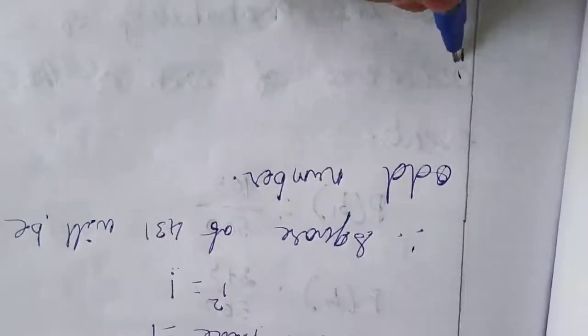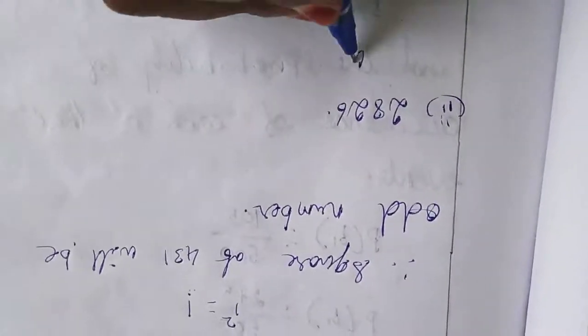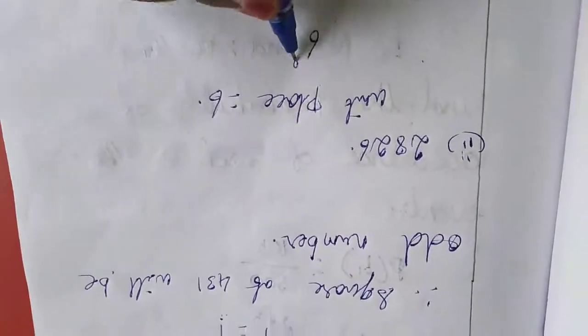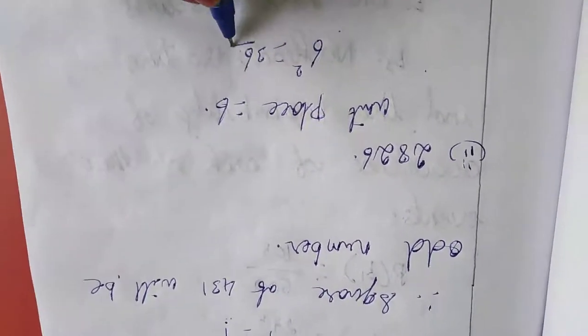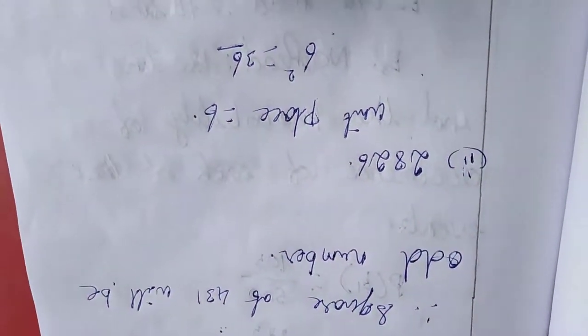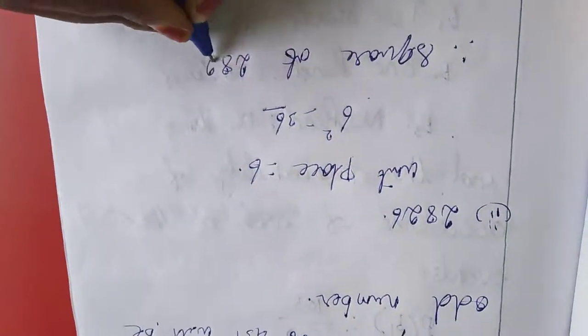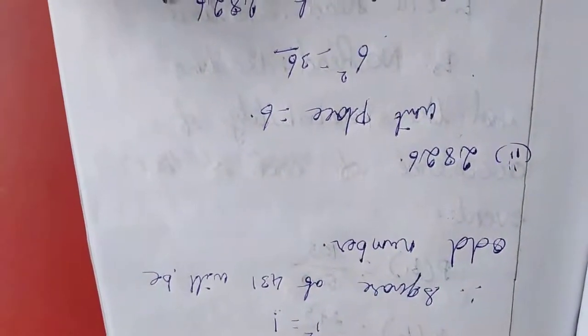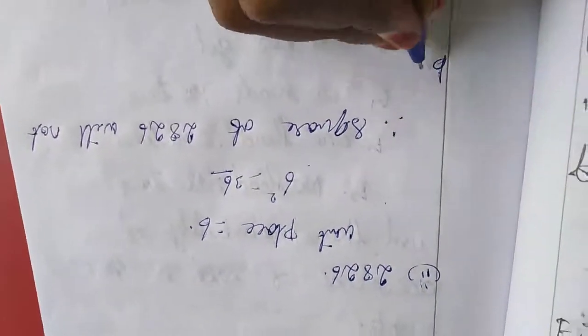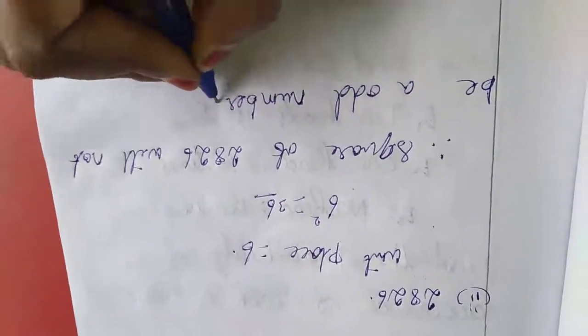I am taking the second sum. See the second sum, 2826. Here, unit place is what? 6. So unit place equal to 6, 6 squared is 36. 6 is an even number, therefore, square of 2826 will not be an odd number. This is the answer.